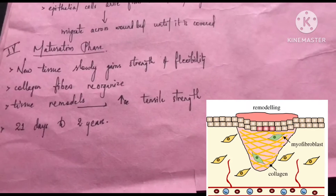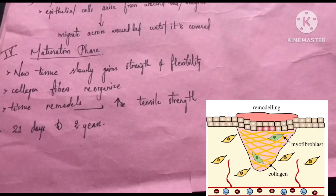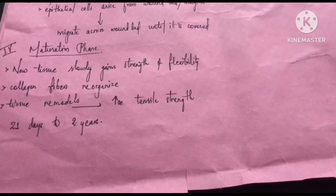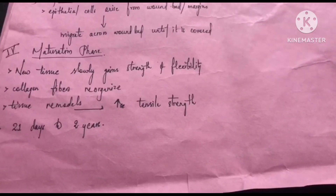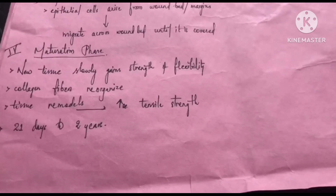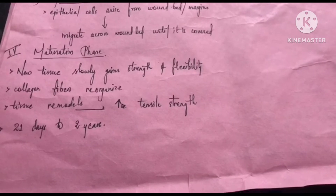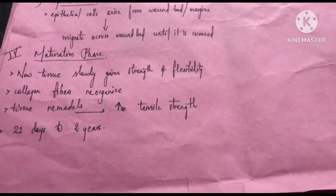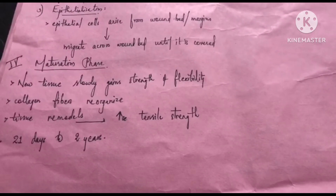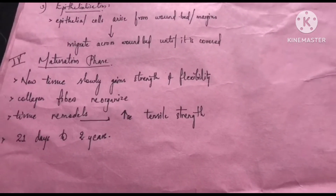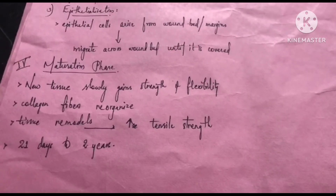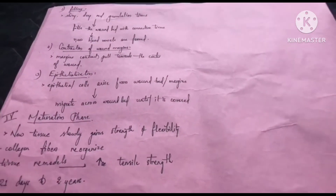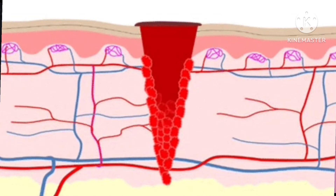In the maturation phase, collagen fibers are reorganized and tissue remodeling takes place. The disrupted tissue is remodeled with new tissue, building tensile strength. This phase can take from 21 days to 2 years, and at last our newly formed tissues will be fully matured. The healing process overall is remarkable and complex.